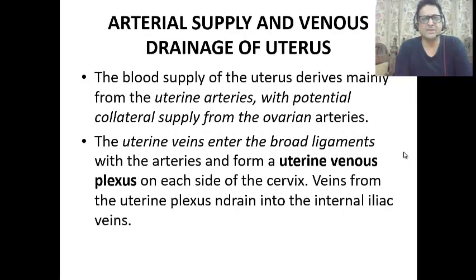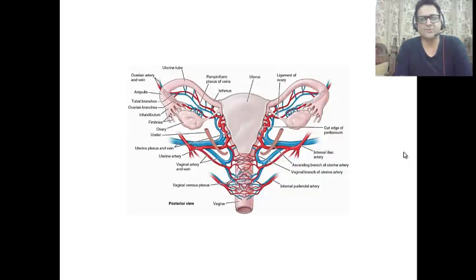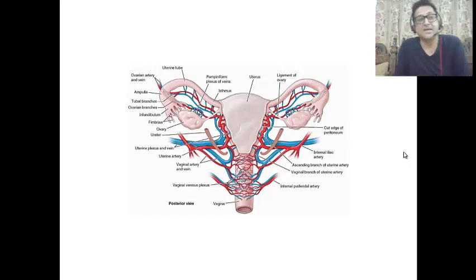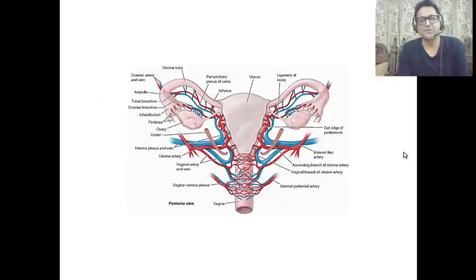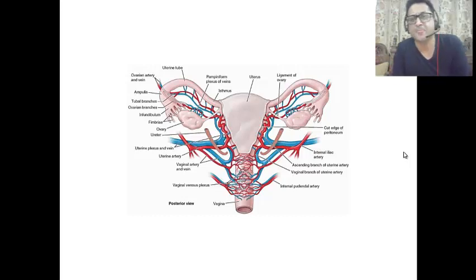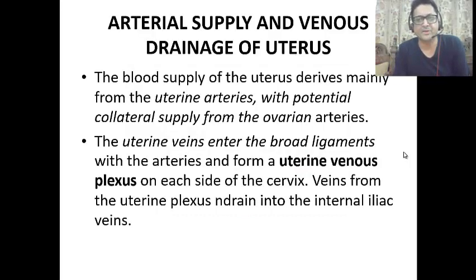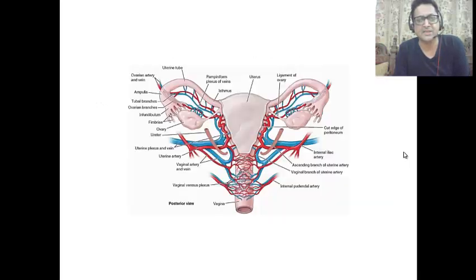The arterial supply of the uterus comes from the uterine artery and the vaginal artery. The venous drainage is via the uterine venous plexus, which drains into the internal iliac veins.